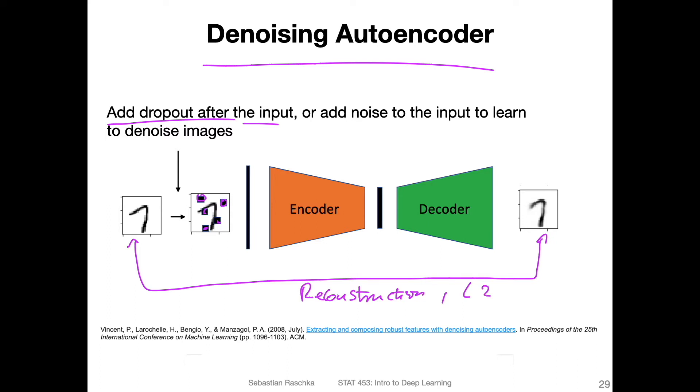For instance, using the L2 norm or mean squared error, it will learn how to ignore the noise. The encoder only sees these noisy images, and it will learn how to remove the noise because it wants to minimize the error between the original input and the output. In this way, you can train autoencoders to denoise images. You can also train them for other tasks like colorizing images. There are different things you can do with autoencoders.